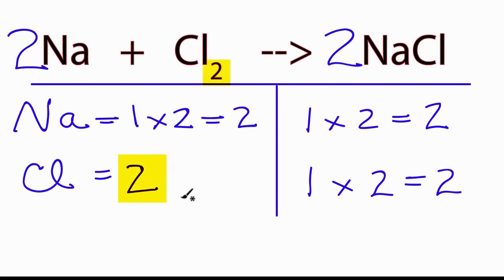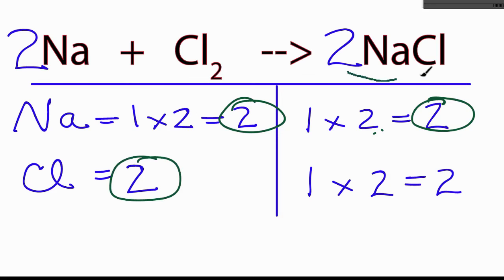We can see that we have 2 times the 1, so we have 2 Na's, and then 2 times 1 there. We have 2 Na's. The Na's are balanced. And we have 2 Cls here, 2 here, 2 times the 1, that gives us 2. So the number and type of atoms on both sides of the equation are balanced, they're the same.